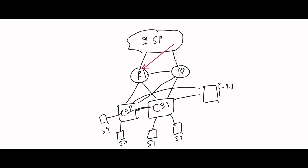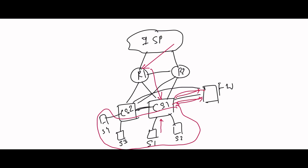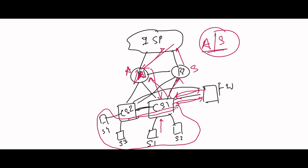In this architecture, traffic comes from the ISP into router one or router two, then to the core switch. The firewall inspects traffic, then sends return traffic back through the core switch. For outbound traffic from a server, it goes: server → core switch → firewall → core switch → router → ISP. This is an active/standby setup — if router one goes down, traffic moves to router two.